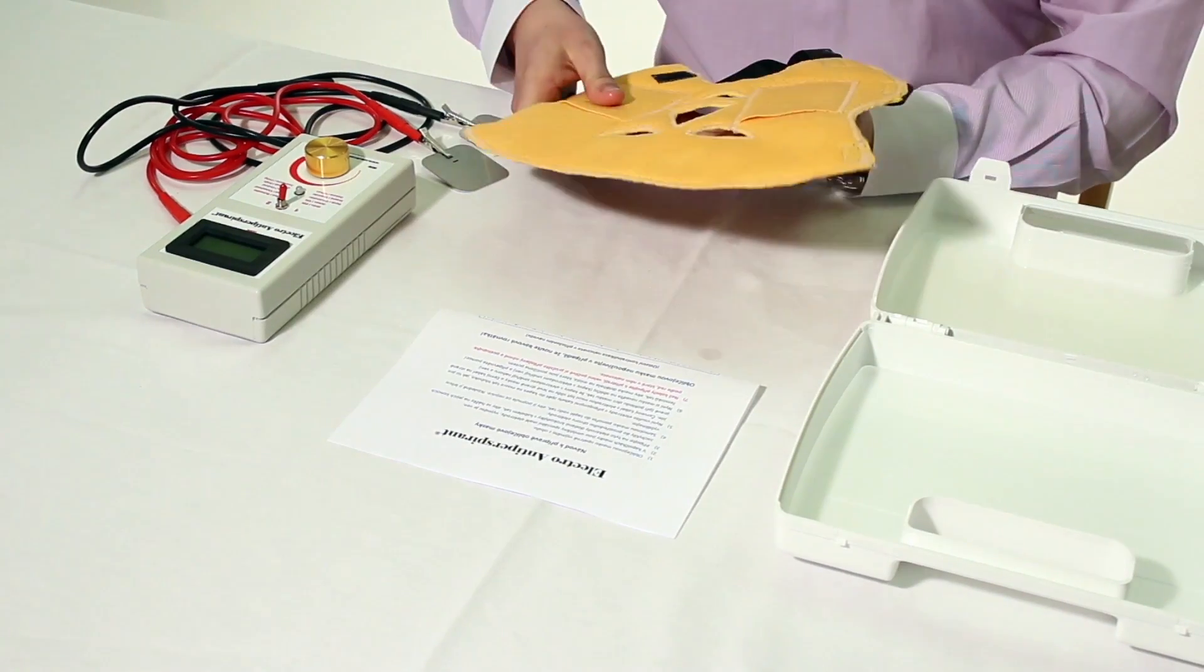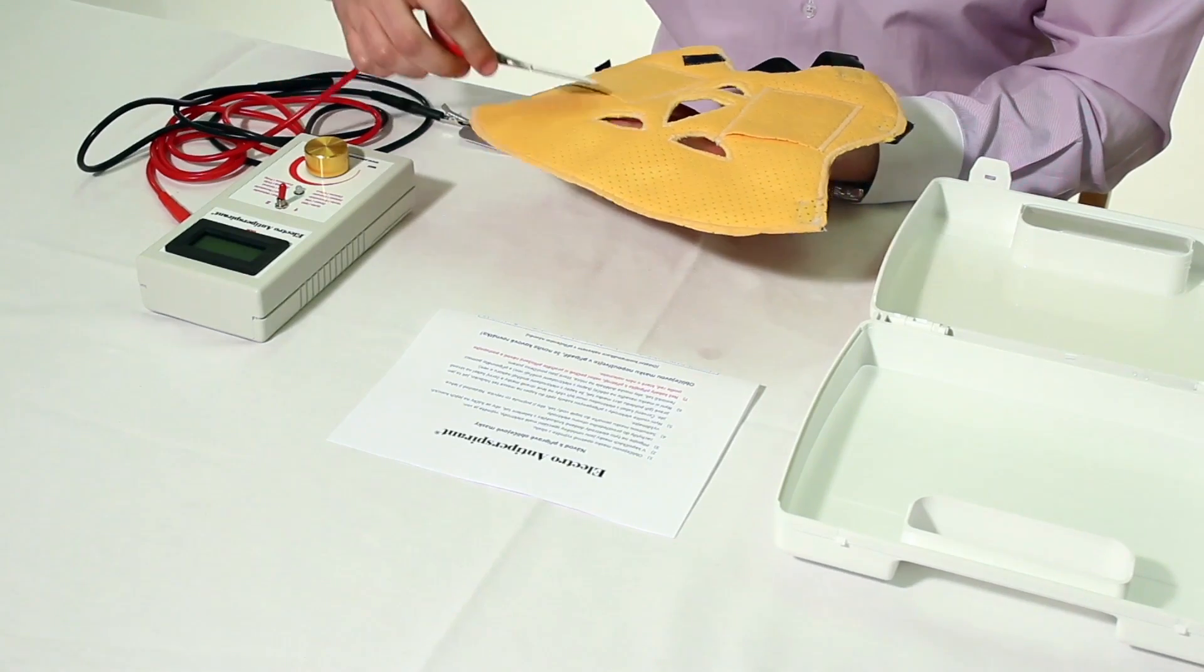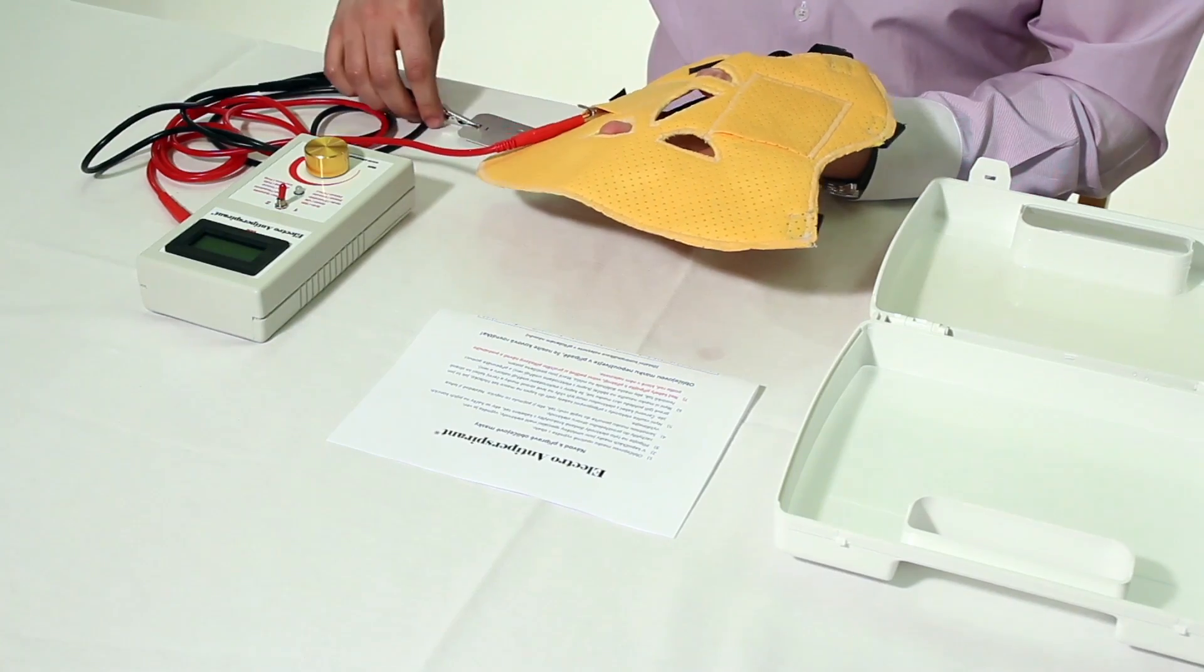Now insert the prepared electrodes along with the conductors back into the electro antiperspirant face mask as deep as it gets.